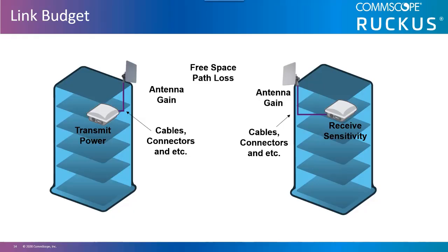Link budget. The link budget is an important step in wireless bridge design or outdoor meshing. You need to make sure that you stay within the legal transmit power and that your link performs as expected, even when conditions may change. To do this, you account for all RF gains and losses throughout the entire link with a minimum RSSI goal defined. This goal of signal strength is the absolute minimum objective for the link to function as required.